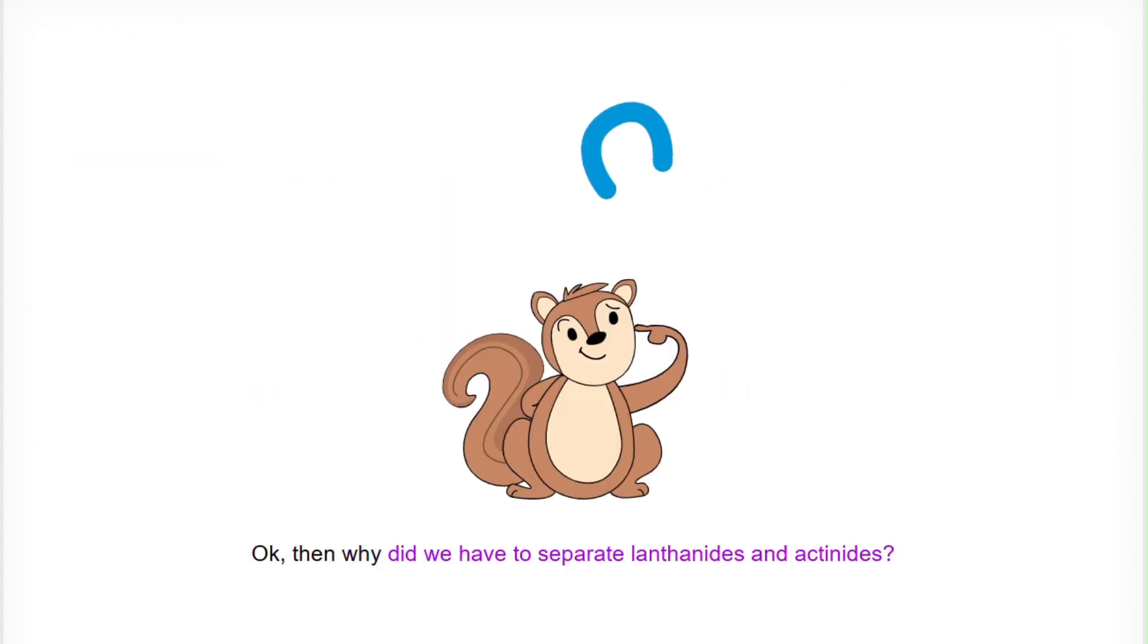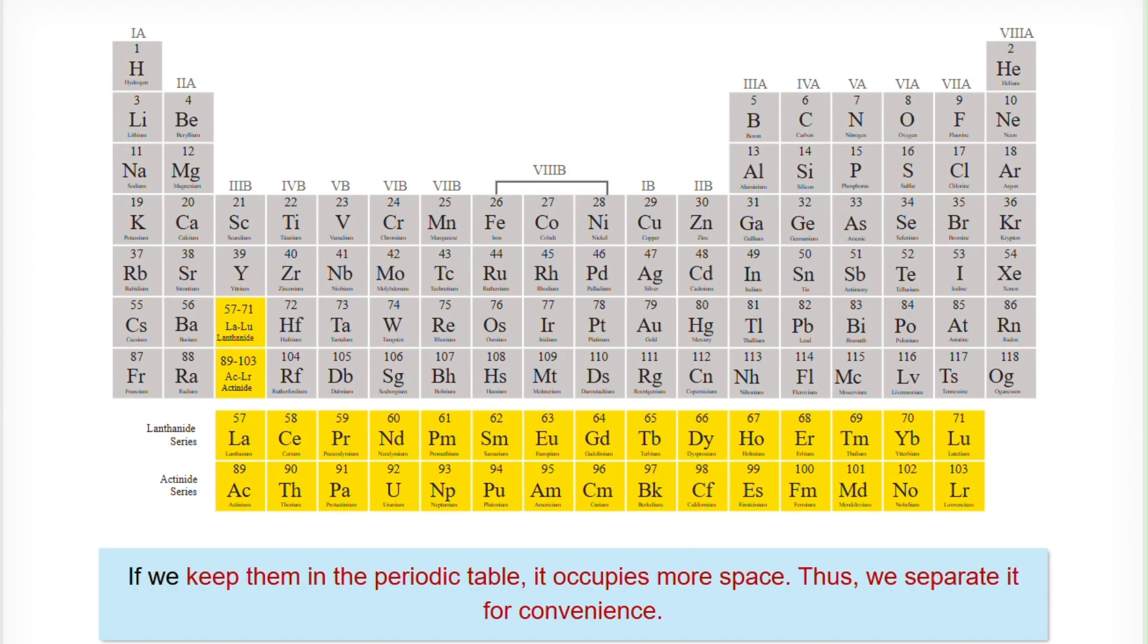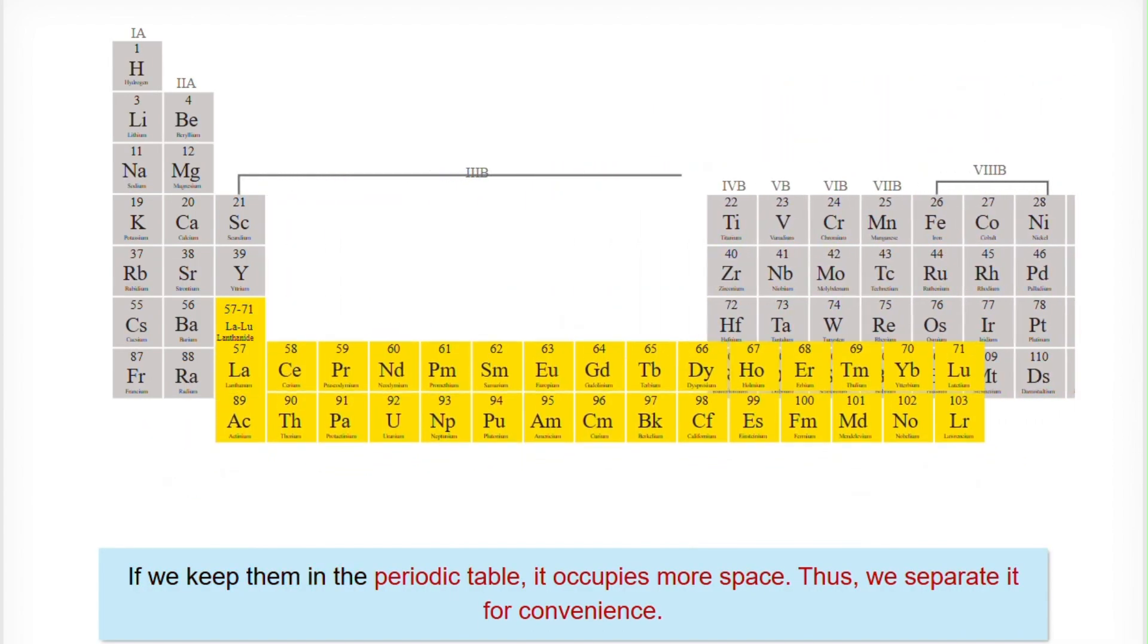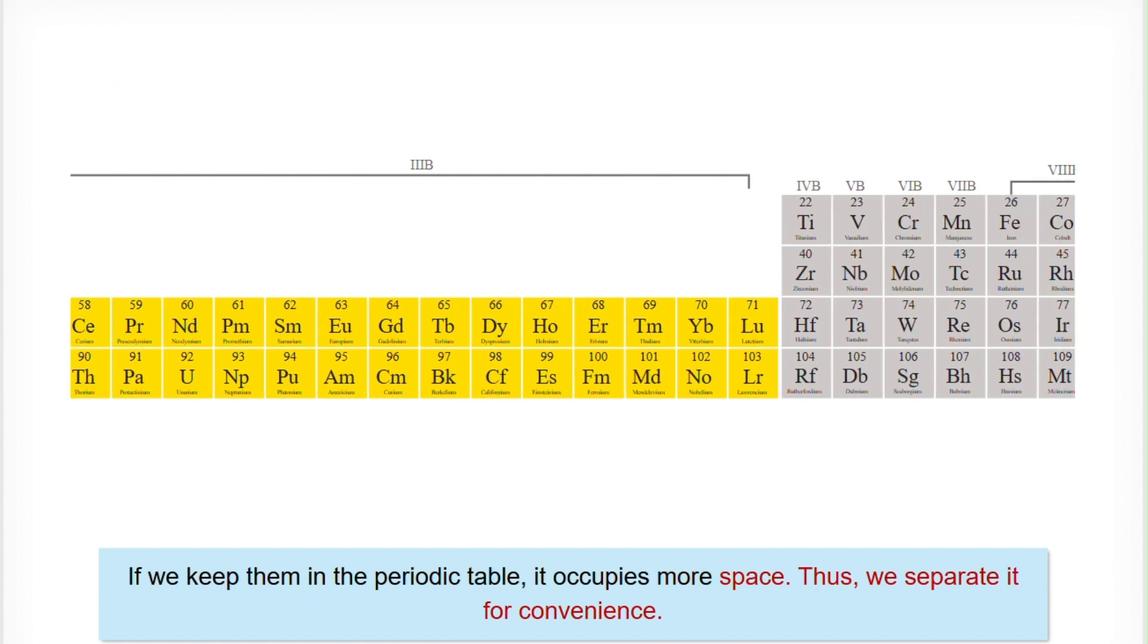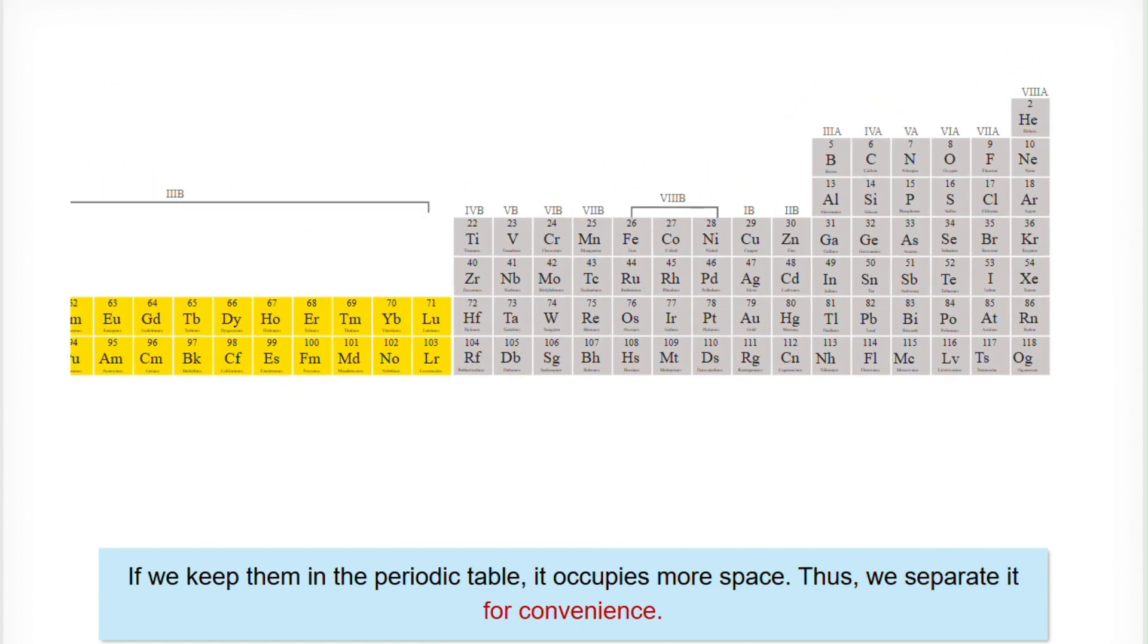Then why did we have to separate lanthanides and actinides? If we keep them in the periodic table, it occupies more space. Thus we separate it for convenience.